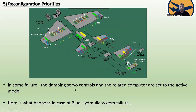Regarding reconfiguration priority: in some failures, the damping servo controls and the related computer are set to active mode. For example, when the blue hydraulic system fails, you can see the damping mode activates — the green becomes active. Similarly, when the green spoiler system fails, reconfiguration occurs accordingly.